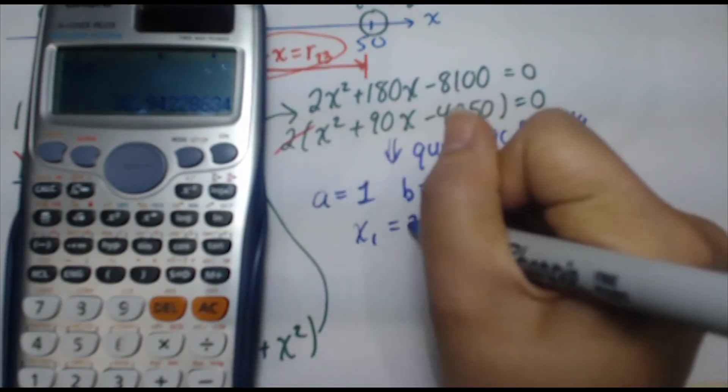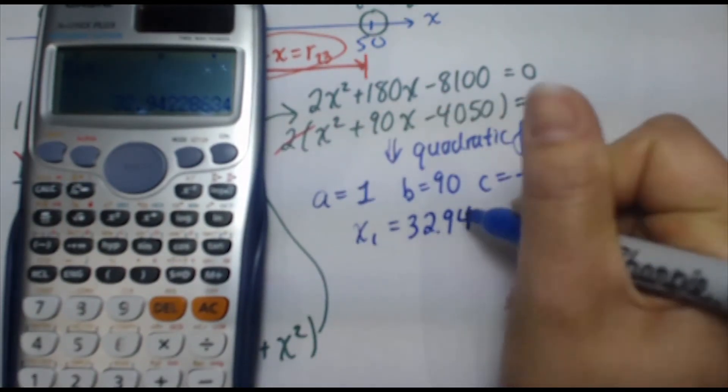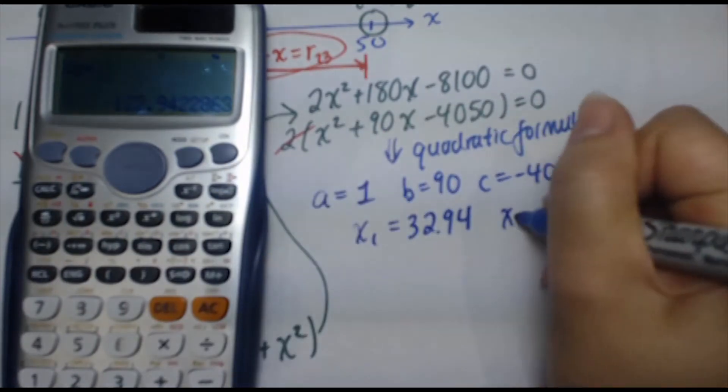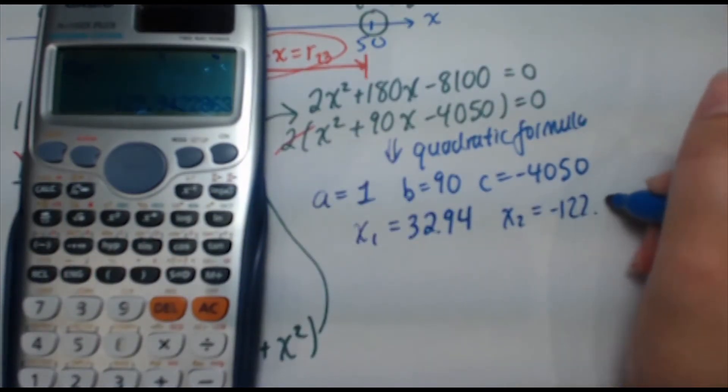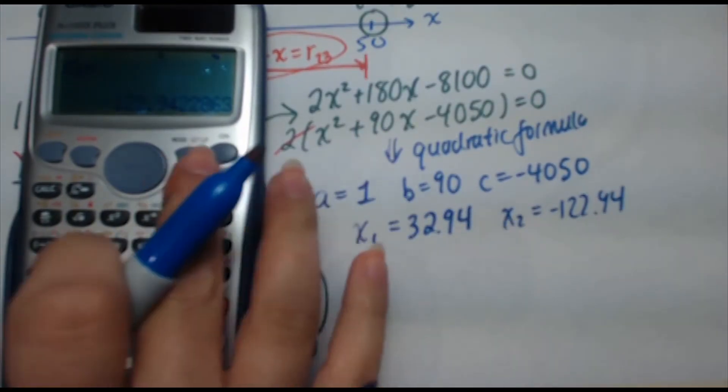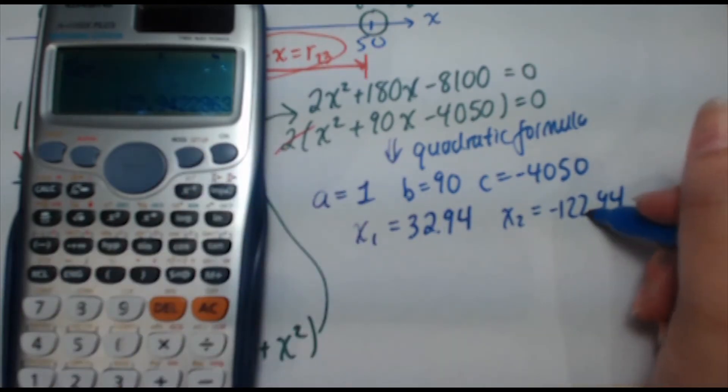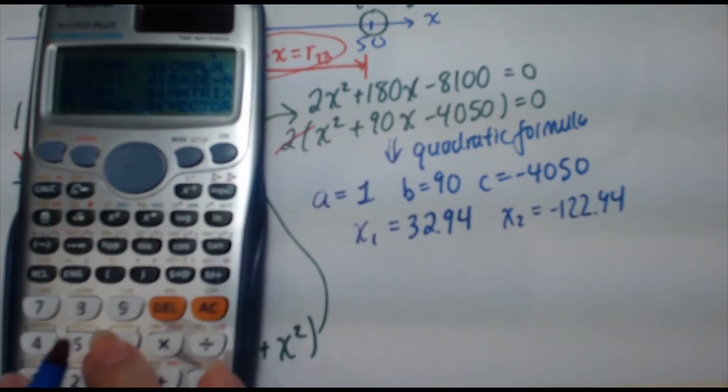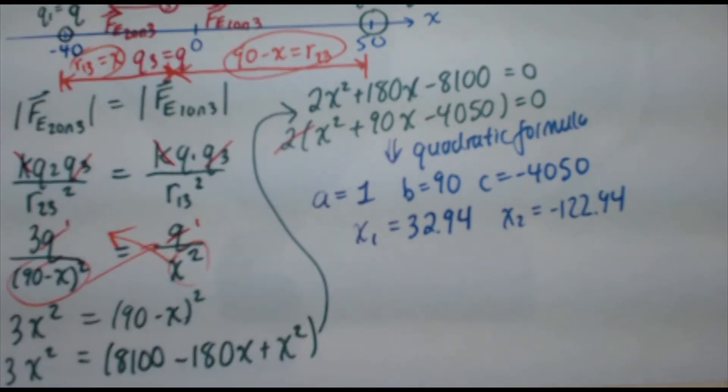So x1 is equal to 32.94 and x2 is equal to negative 122.94. So now if you want to go back to your usual default mode, press mode again and press one to go back to the original computer. So there you have your zeros.